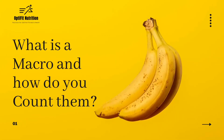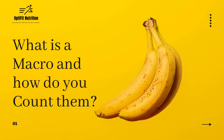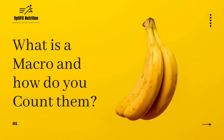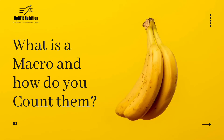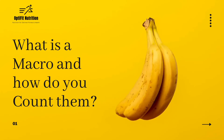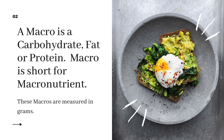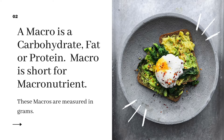If you're new to counting macros and flexible dieting, you might be thinking: what is a macro and how do I count them? This presentation should help you understand. The term macro is short for macronutrients. Your macros consist of your carbohydrates, fats, and proteins.